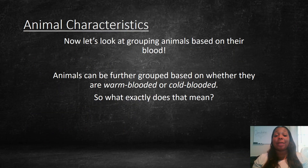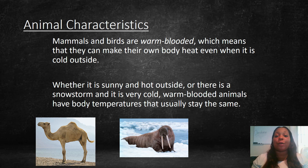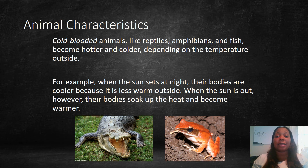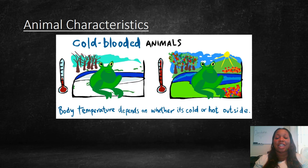Animals can be grouped based on whether they are warm-blooded or cold-blooded. Mammals and birds are warm-blooded, which means they can make their own body heat even when it is cold outside. Their body temperatures usually stay the same regardless of the weather. Cold-blooded animals — like reptiles, amphibians, and fish — become hotter and colder depending on the weather outside. When the sun sets, their bodies cool down; when the sun is out, their bodies soak up the heat and become warmer.